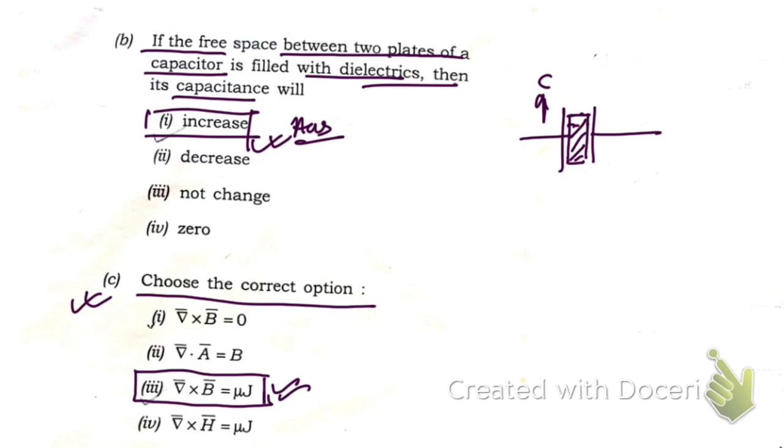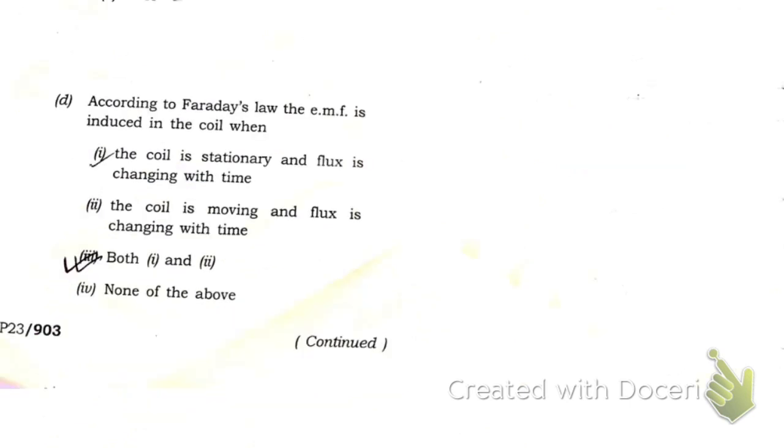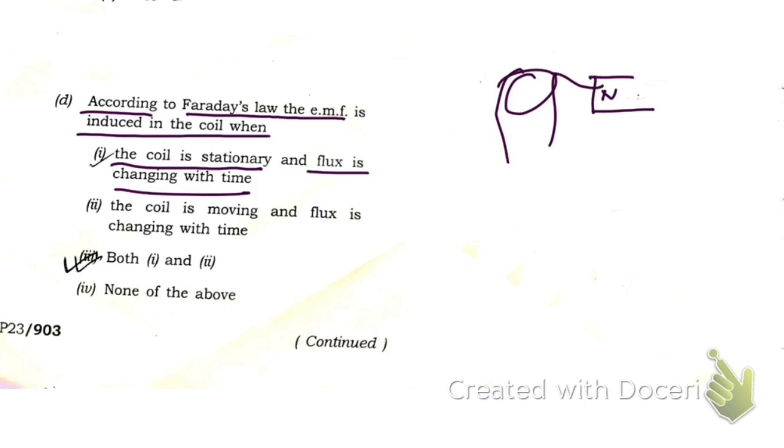According to Faraday's law, the EMF is induced in a coil when - this tick is not given by me, don't take this as the answer. The coil is stationary and flux is changing with time - that is also correct. If you are bringing a magnet towards the coil and continuously changing the magnetic flux linked with the coil, then induced EMF will be produced.